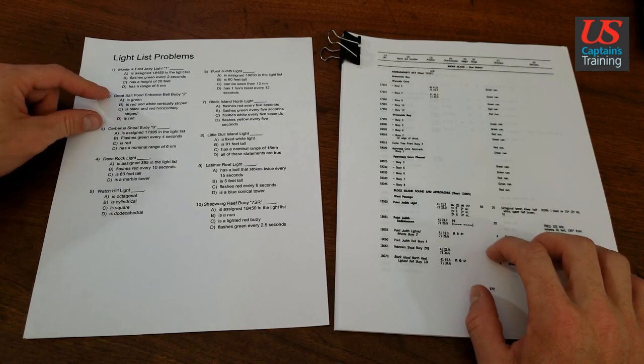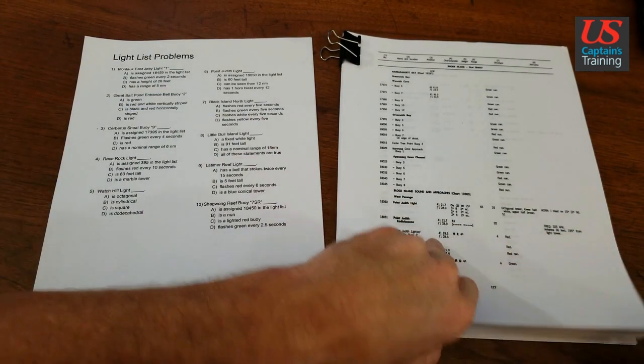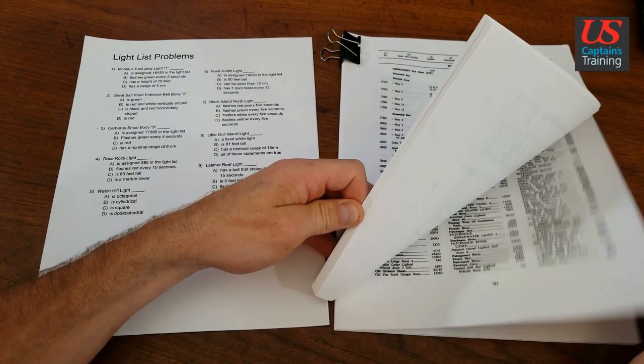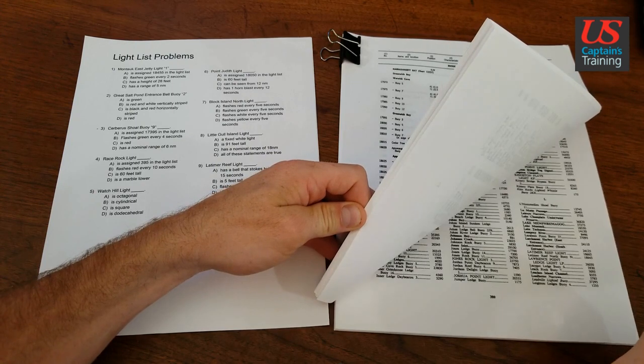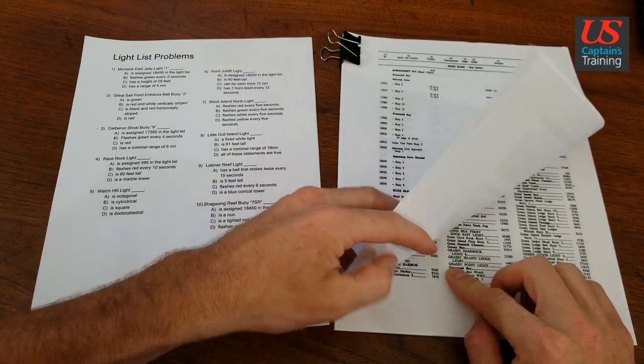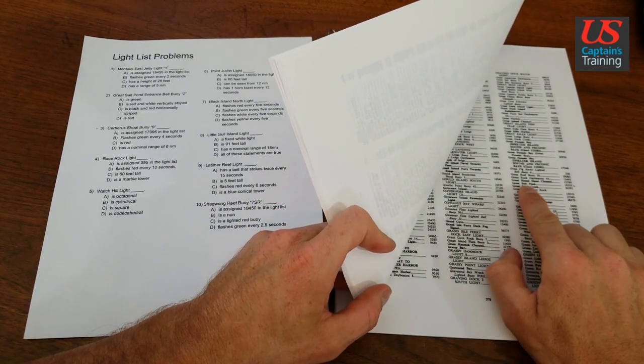So let's go to the light list and look up Great Salt Pond Entrance Bell Bowie 2. Go to the index, we're looking up Great Salt Pond. Going through alphabetically: A, B, C, E, F, G, H, G, R... Great South, Great Salt Pond.